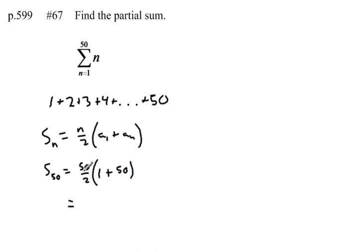So my sum is going to equal 50 divided by 2 is 25, times 1 plus 50, which is 51. 25 times 51, let me just pull my calculator out quick.